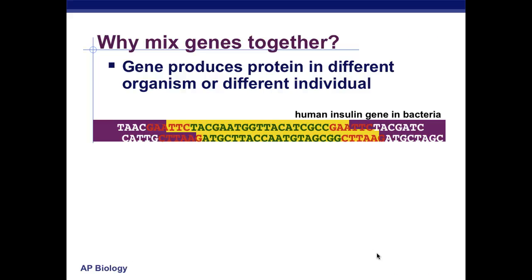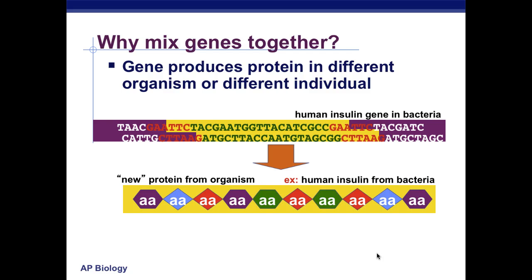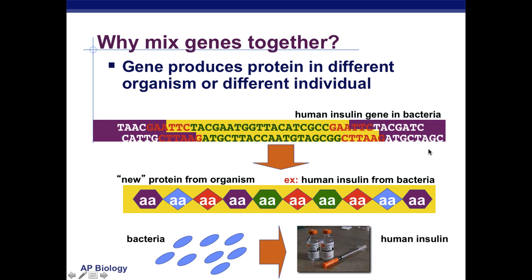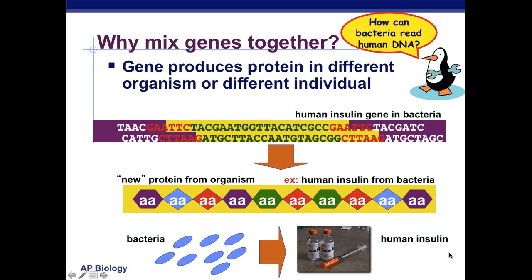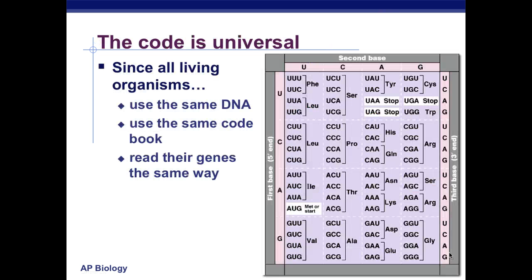Why mix genes together? Genes produce proteins in different organisms or different individuals. So, a human insulin gene in bacteria will still produce the same protein. Although it came from bacteria, it still has the same genes and proteins to result in human insulin. So how can bacteria read human DNA? We have the universal code — since all living organisms use the same DNA, we use the same code book. They read genes the same way.